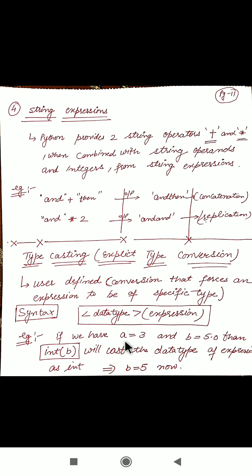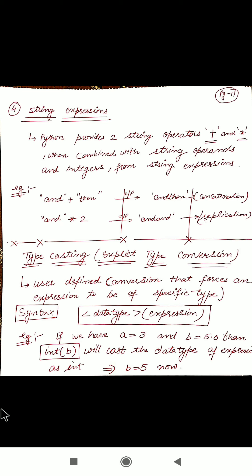For example, if a is 3 (integer type) and b is 5.0 (float type), then writing int(b) means we are trying to type cast the float variable b into an integer type variable, so we get the output b equals 5. This happened because we type casted the floating type variable into an integer type variable. The concept is clear; we will continue in our next lecture.